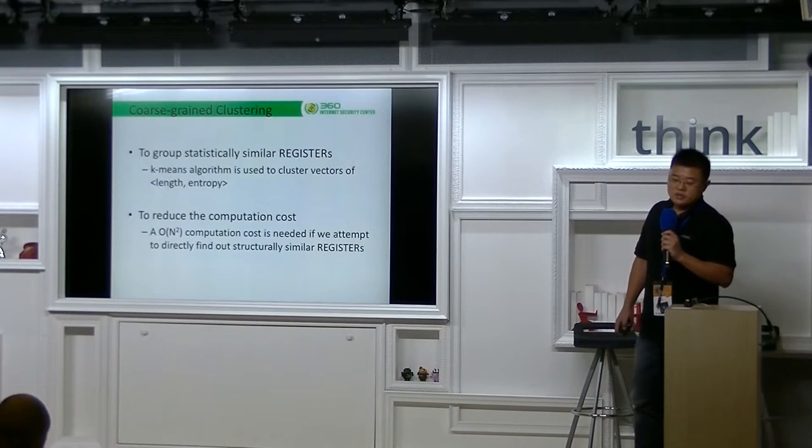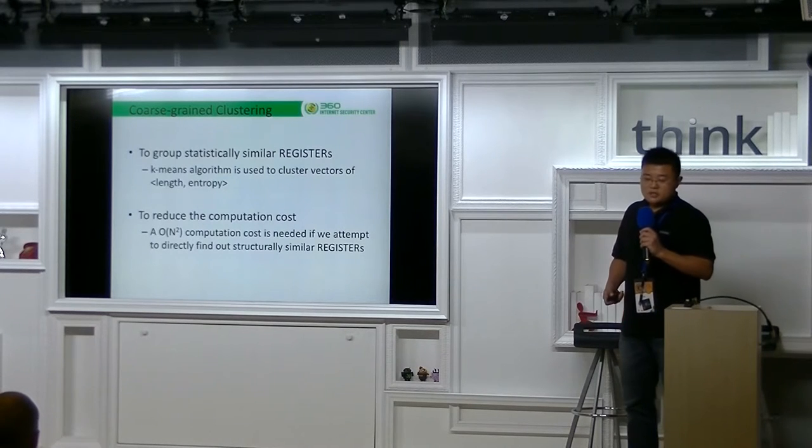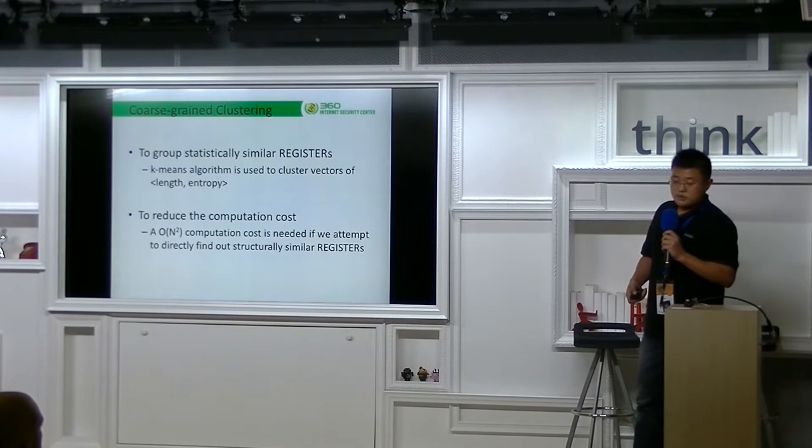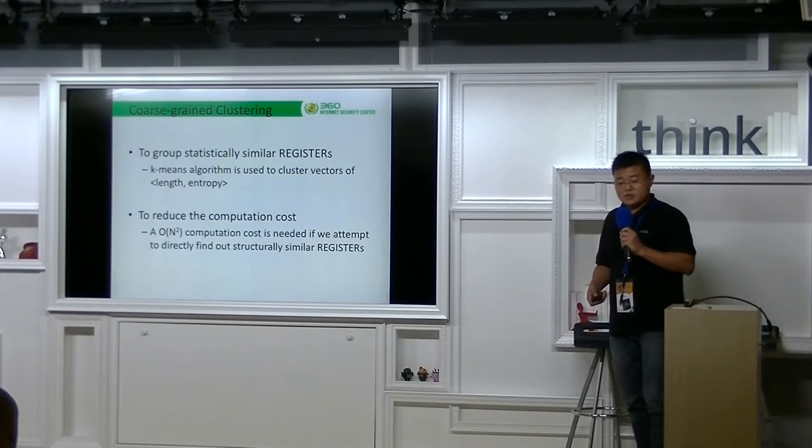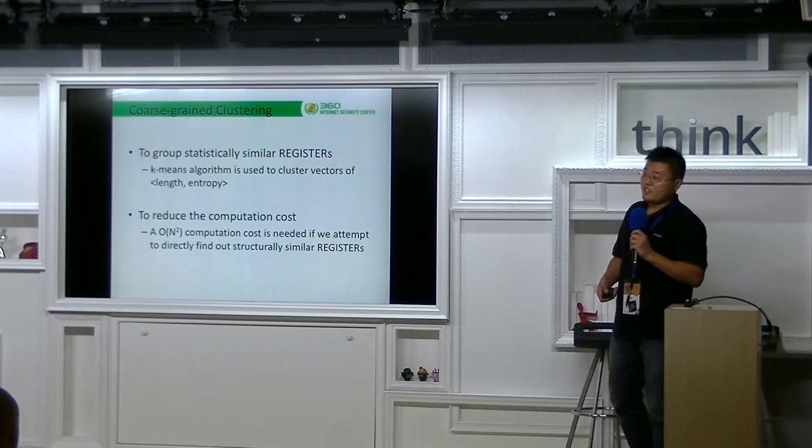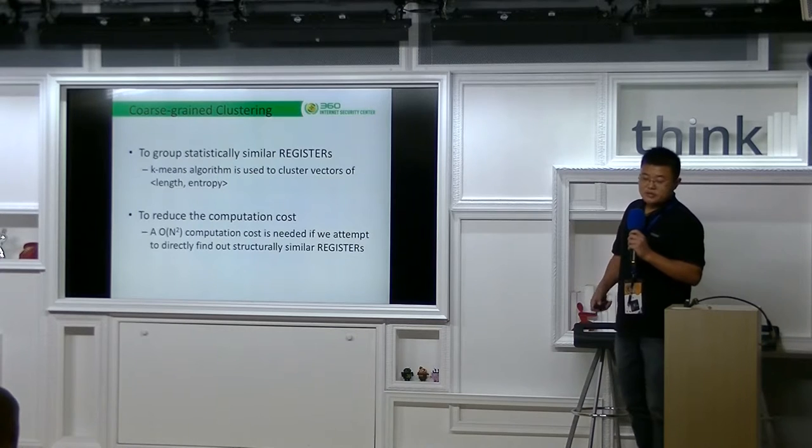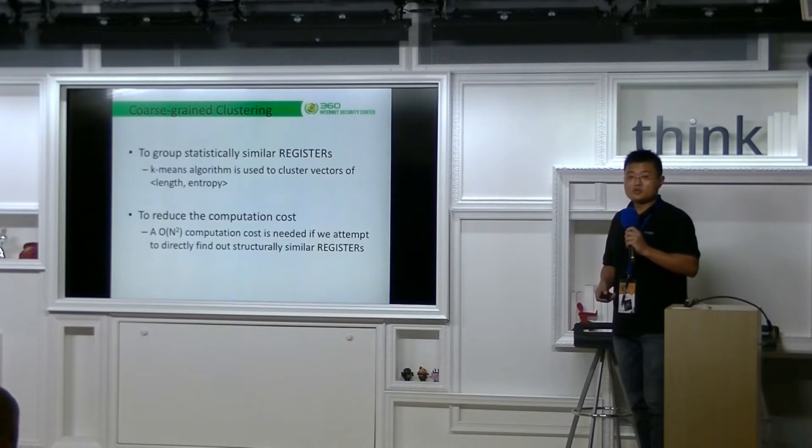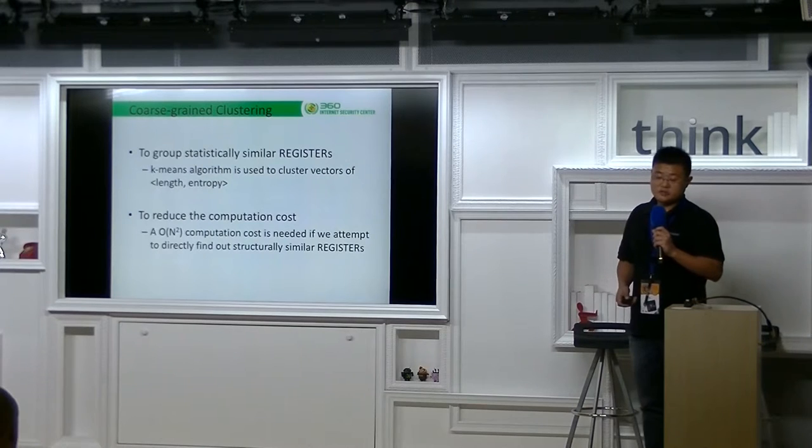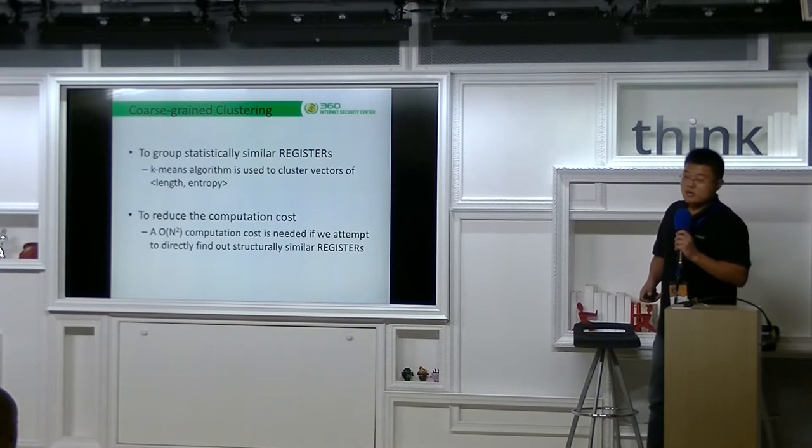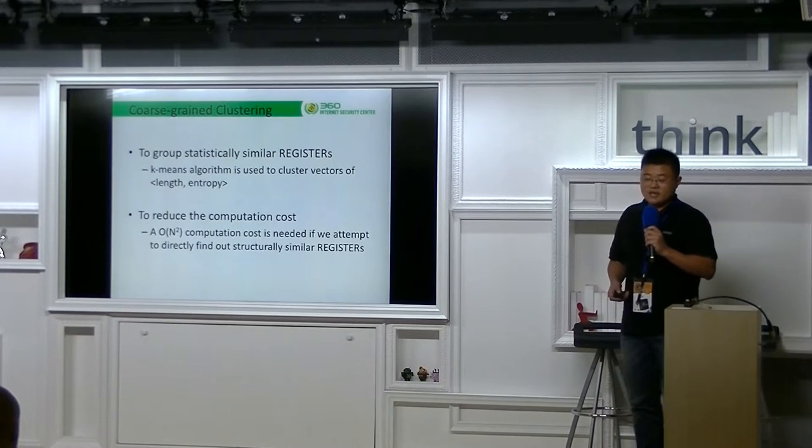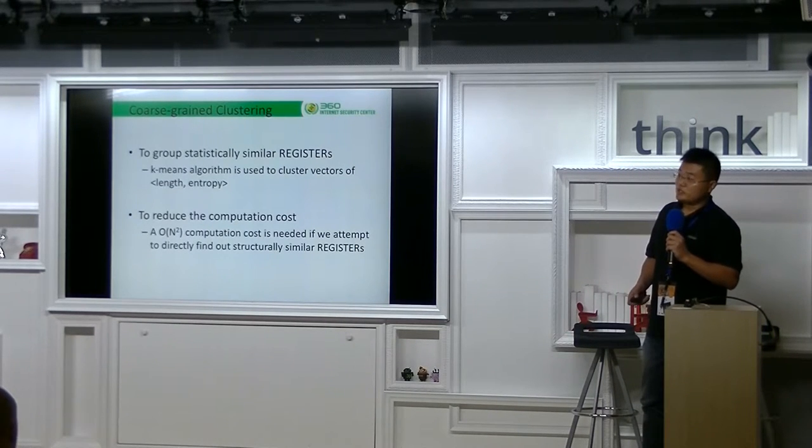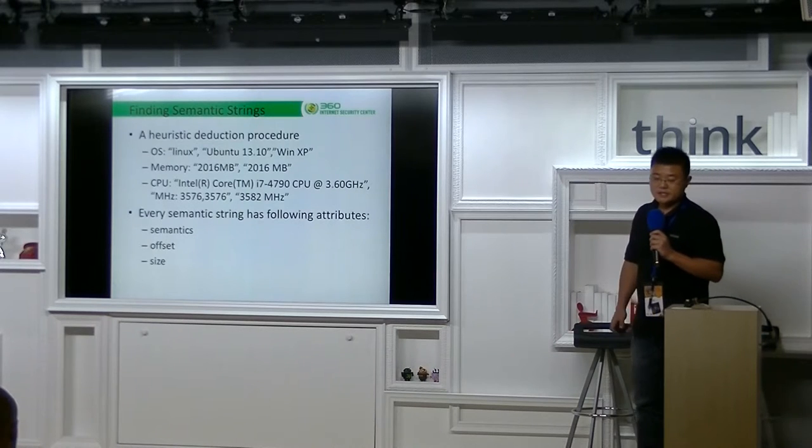Coarse-grained clustering. This step is used to group statistically similar registers. Basically, it's a step of k-means clustering on vectors of length and entropy. We arranged this step just to reduce the computation cost, because an n-squared computation cost is needed if you attempt to directly find out structurally similar registers.